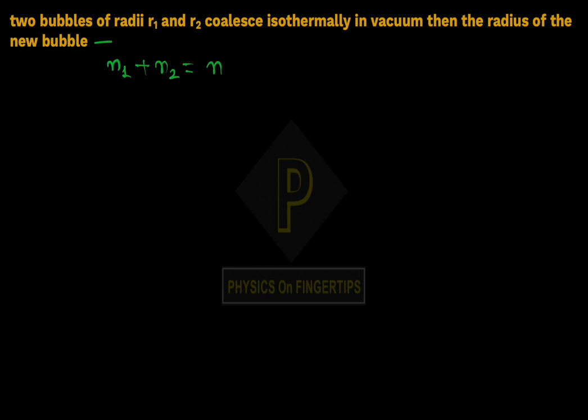So n equals PV upon RT. P1V1 upon RT1 where temperature is constant. P2V2 upon RT2 where temperature is constant. So P1V1 plus P2V2 equals PV.